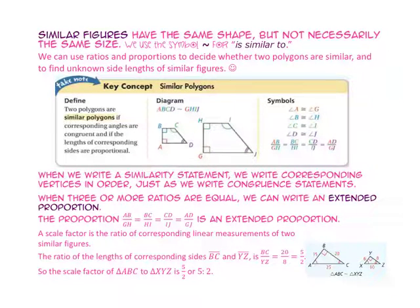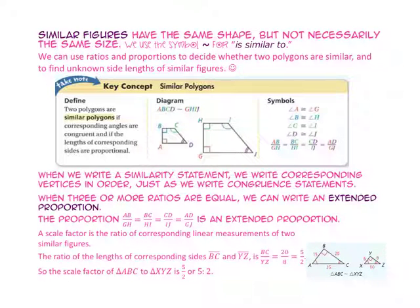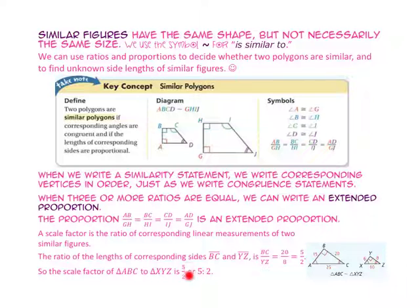A scale factor is a ratio of corresponding linear measurements of two similar figures. The ratio of the lengths of the corresponding sides, side BC and side YZ, is the length of side BC to YZ equals 20 to 8, which reduces to 5 to 2. So the scale factor of triangle ABC to triangle XYZ is 5 to 2.